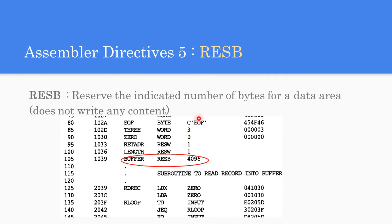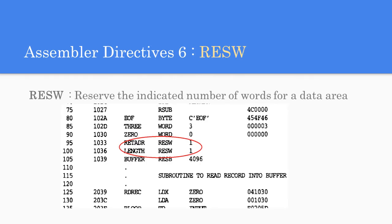The RESW directive reserves that many words in a particular memory area. For example, 'RETADR RESW 1' reserves one word — equivalent to 3 bytes — for the variable RETADR. If it were RESW 2, it would reserve 2 words or 6 bytes. So the assembler directives we have seen are: START, END, BYTE, WORD, RESB, and RESW.